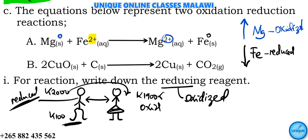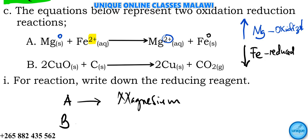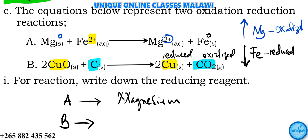So we can now answer the question. The reducing agent is the substance which has been oxidized. In equation A, the reducing agent is magnesium, because it is the one which has been oxidized. In equation B, looking at copper oxide, copper loses oxygen, whereas carbon gains oxygen - therefore carbon has been oxidized and copper has been reduced. So in equation B, the reducing agent is carbon.